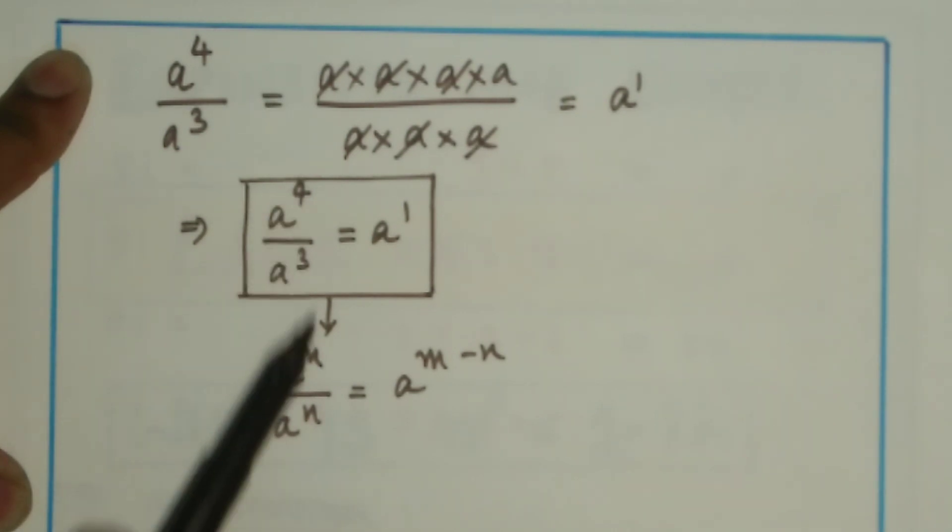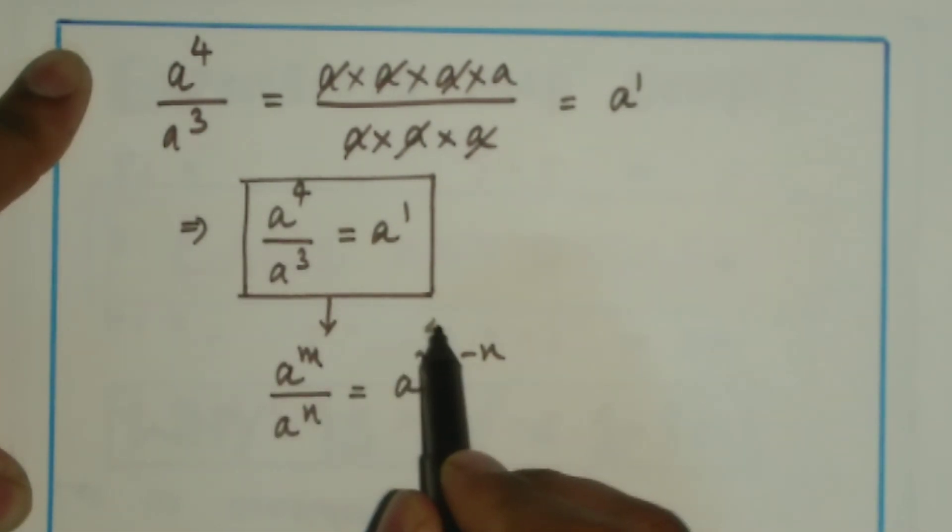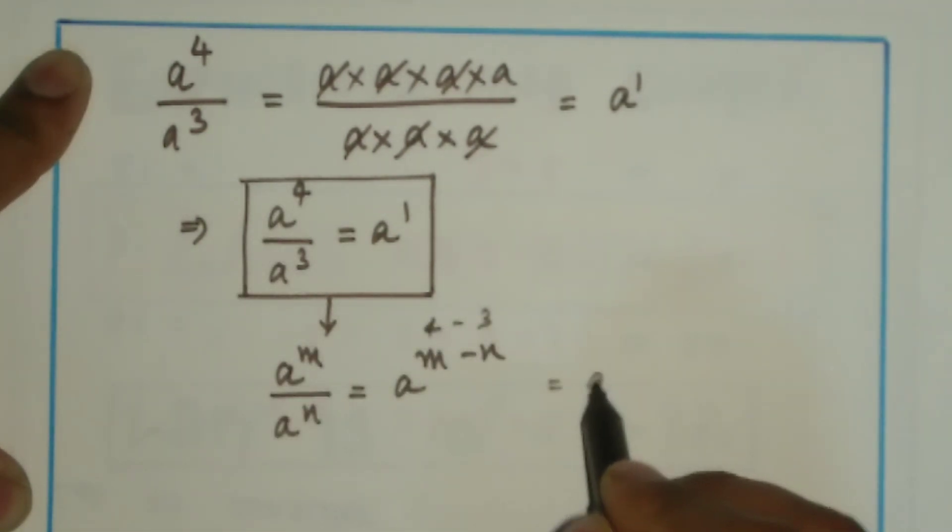In this example, in the place of m I have 4, in the place of n I have 3. So on applying this formula to this example, I get a power 4 by a power 3 is a power 4 minus 3, that is nothing but a power 1.